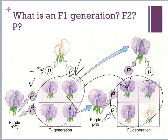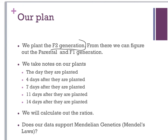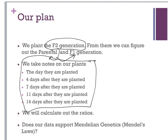Normally I would grow the F1, harvest the seeds, and then grow the F2, but this year we are just looking at the F2 generation. We are going to plant our F2 generation, which we've already done, and from there we can figure out our parentals and F1 generation. We want to make sure it's following Mendelian law. We are taking notes on the day they are planted and then approximately four days later — we obviously cannot come in on the weekend.